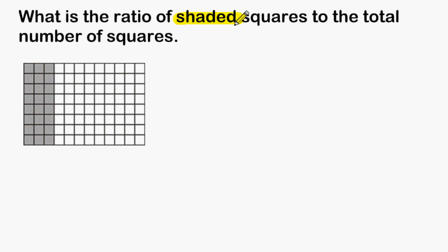This problem wants us to find the ratio of shaded squares to the total number of squares. If we take a look at the shaded portion of this rectangle, we should recognize that we could shade three more sections with the identical size as the shaded part.